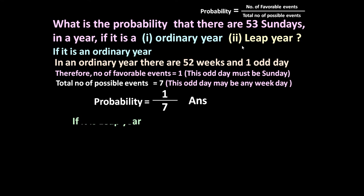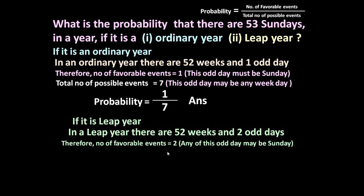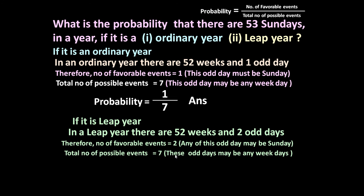Part two — if it is a leap year, there will be 52 weeks meaning 364 days, and two odd days, because in a leap year there are 366 days. These two odd days mean the number of favorable events will be two, because either the first odd day may be a Sunday or the second odd day may be a Sunday — for example, Saturday-Sunday or Sunday-Monday. Total number of possible events is seven, so the probability is two upon seven.